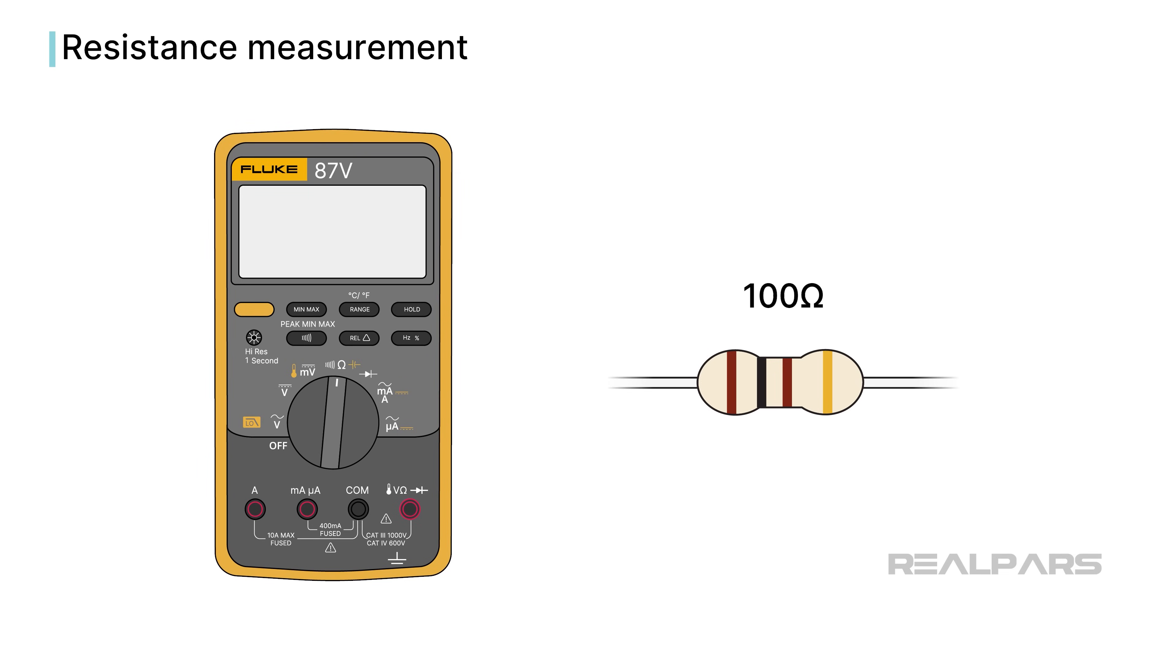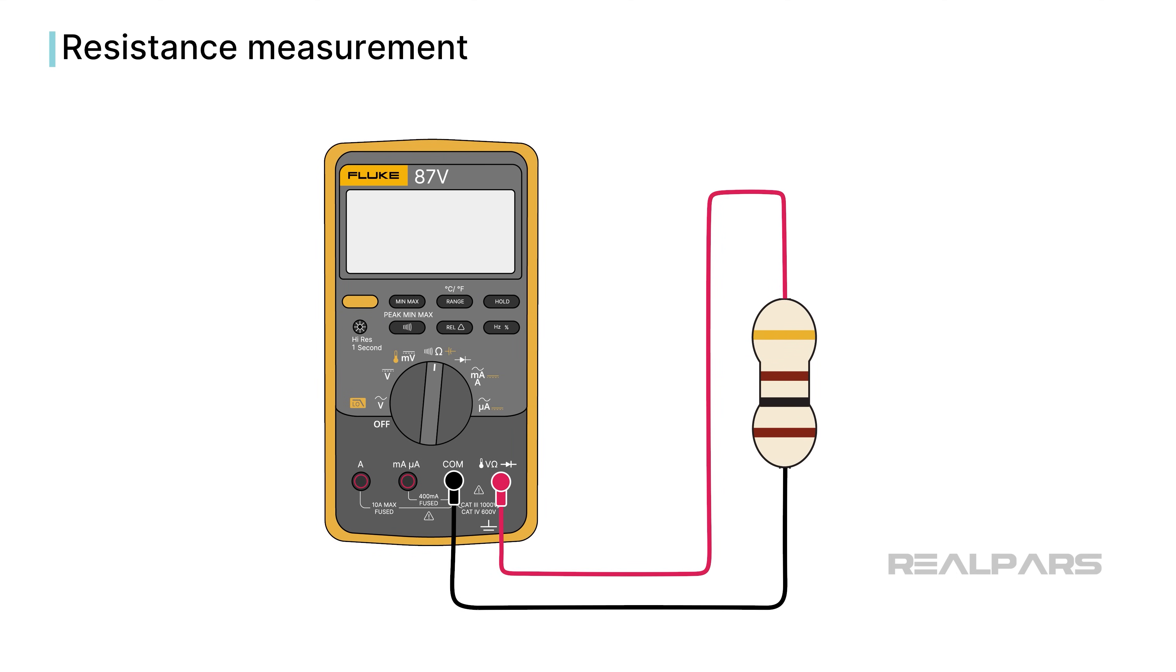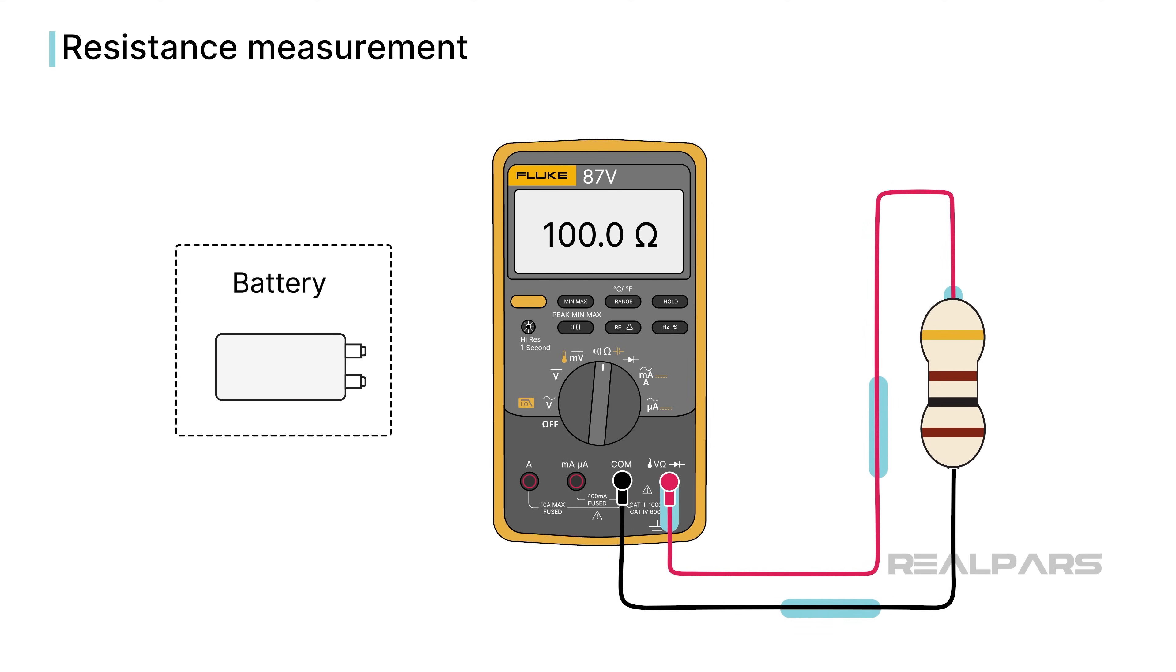The Fluke 87-5 measures resistance by changing the selector switch to the appropriate position. Pushing the range button obtains a better measurement resolution. The measurement probes are inserted into the ohm and common jacks. The ohmmeter acts like a mini power supply by applying a voltage across the device under test and calculating the resistance based on the resulting current flow.